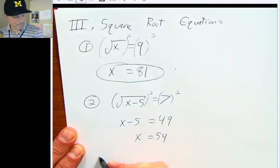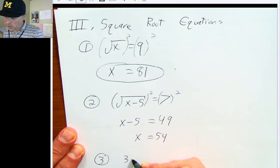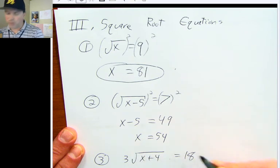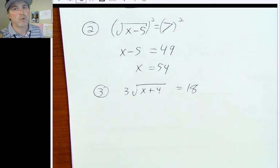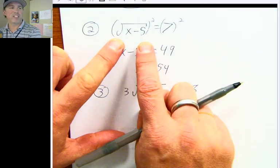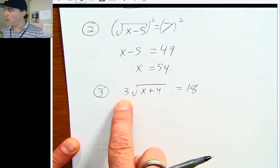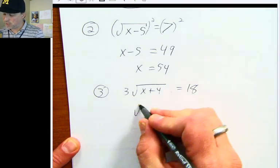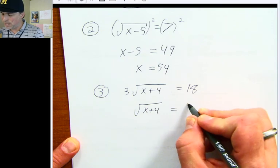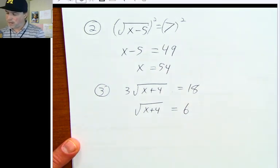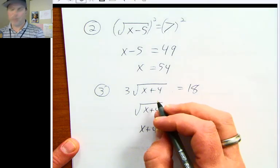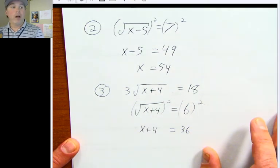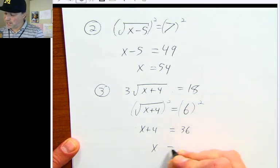One more example and then we're done. Number three: three times the square root of x plus four equals 18. You can square both sides now, but a lot of people make mistakes if they do that. First isolate the square root by dividing both sides by three, giving the square root of x plus four equals six. Then square both sides: x plus four equals 36. Subtract four from both sides: x equals 32.